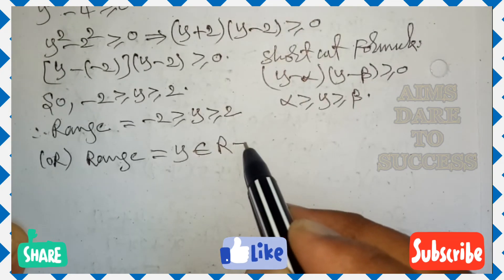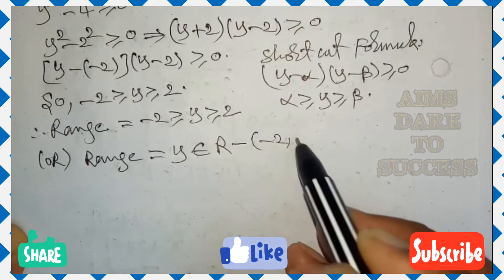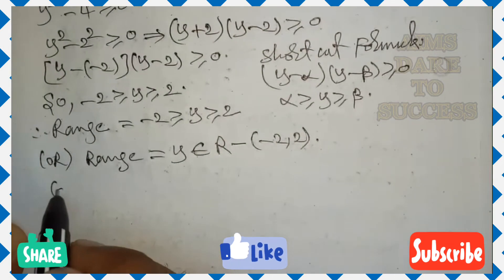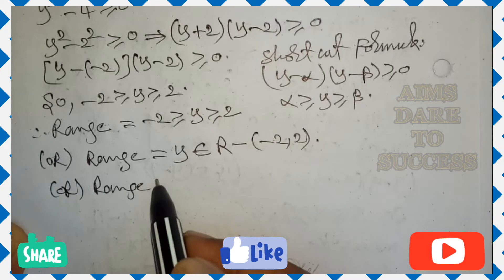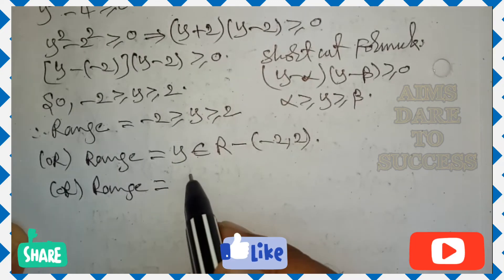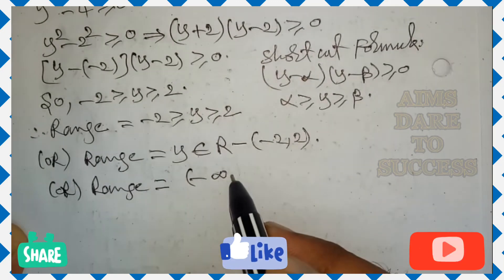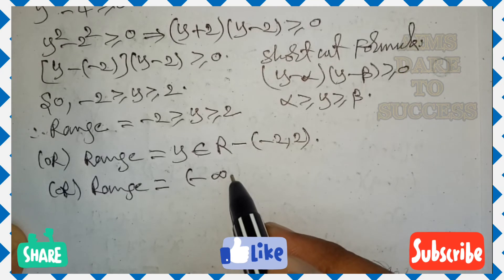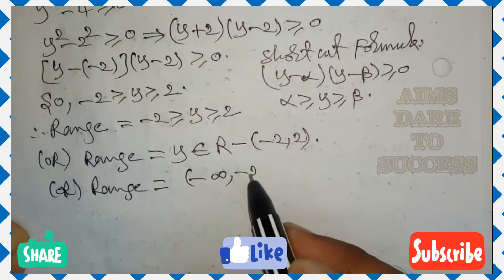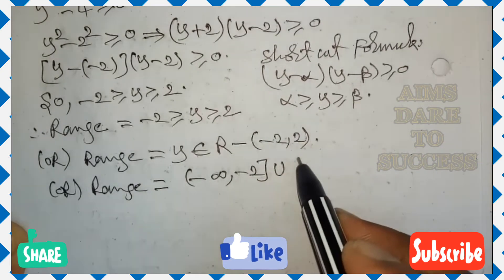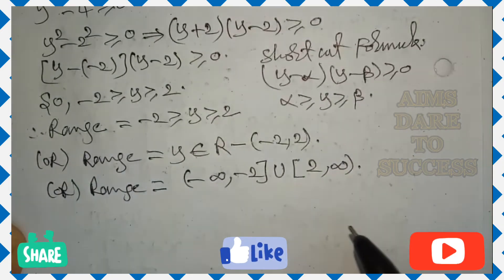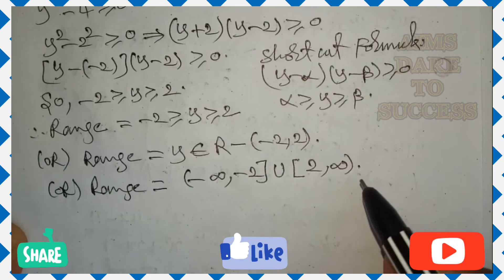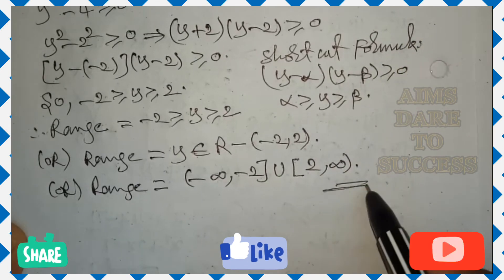we can write different ways. So range is equal to y belongs to r minus open interval minus 2 comma 2. If you write this also right answer, or range is equals to we can write another way also, open interval minus infinity comma closed interval minus 2 union closed interval 2 comma open interval infinity. Infinity value we can't specify, so that's why you can use open interval.